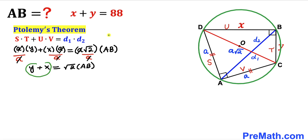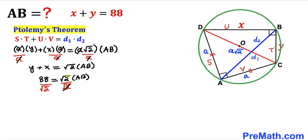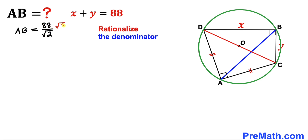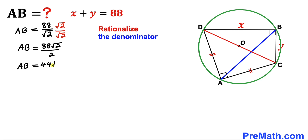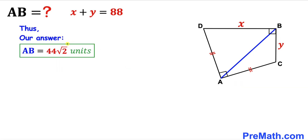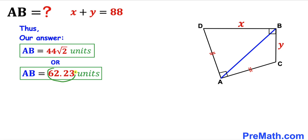Since X plus Y equals 88, we substitute to get 88 equals square root of 2 times AB. Dividing both sides by square root of 2 gives AB equals 88 divided by square root of 2. Rationalizing the denominator by multiplying by square root of 2 over square root of 2, we get AB equals 44 times square root of 2 units, which equals approximately 62.23 units.